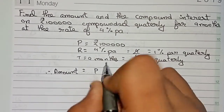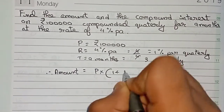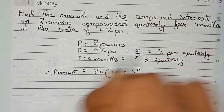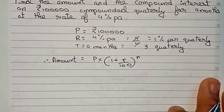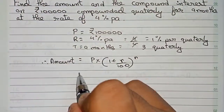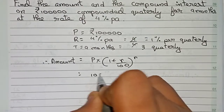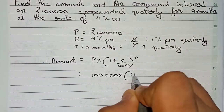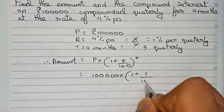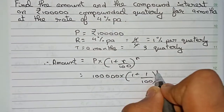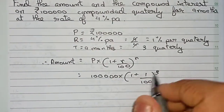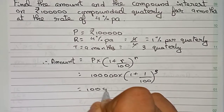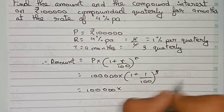Now we find the amount using the formula: Amount = Principal × (1 + r/100)^n, where n is the number of time periods. Substituting values: Amount = 1,00,000 × (1 + 1/100)^3.